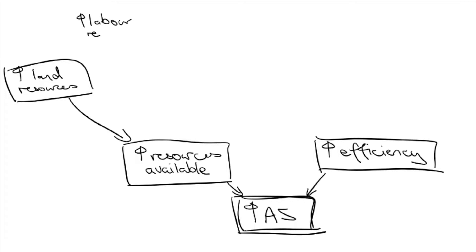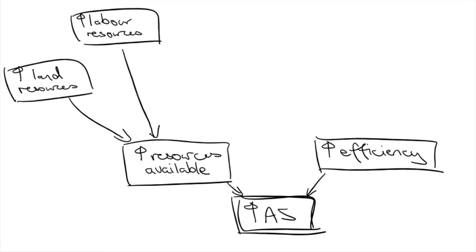Second is labor resources. We could increase the quantity of labor by increasing the population. It's no coincidence that the three largest countries by population — the US, China and India — are also three of the largest or fastest growing economies in the world. Labor resources can also be increased by maximizing the participation rate.